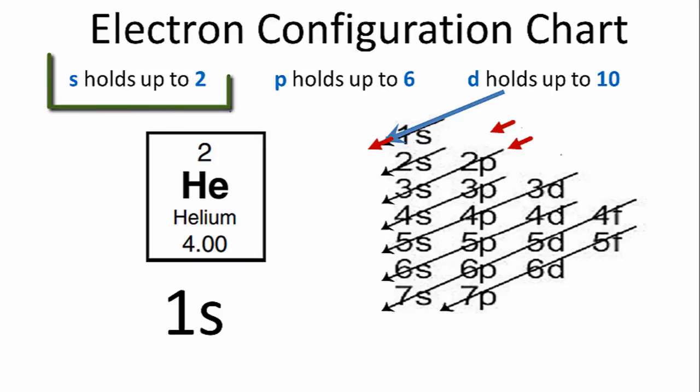So we have the 1s, and we know that s orbitals can hold up to two electrons. So we'll go ahead and put a 2 as the superscript to show that there are two electrons in this 1s² orbital.